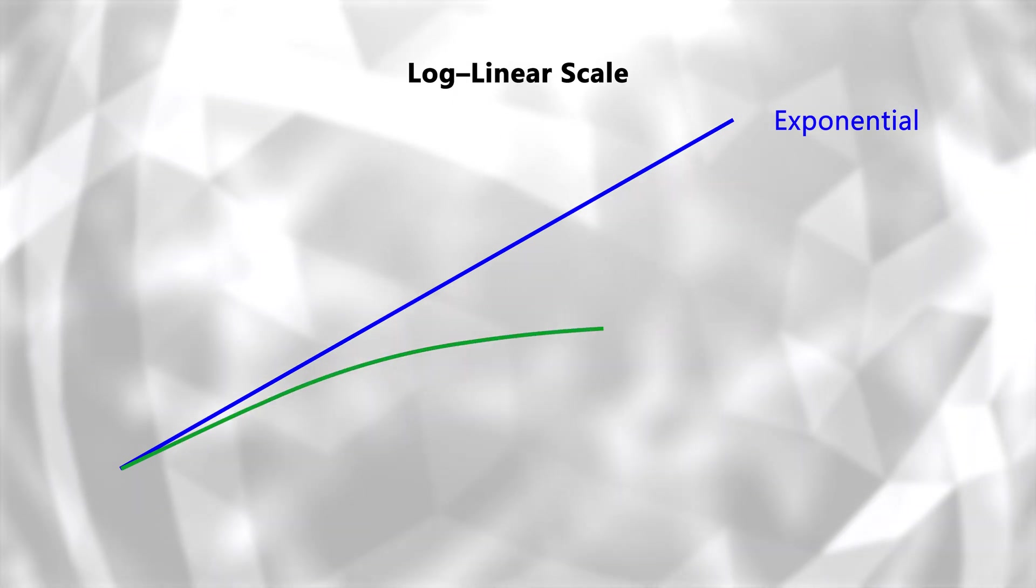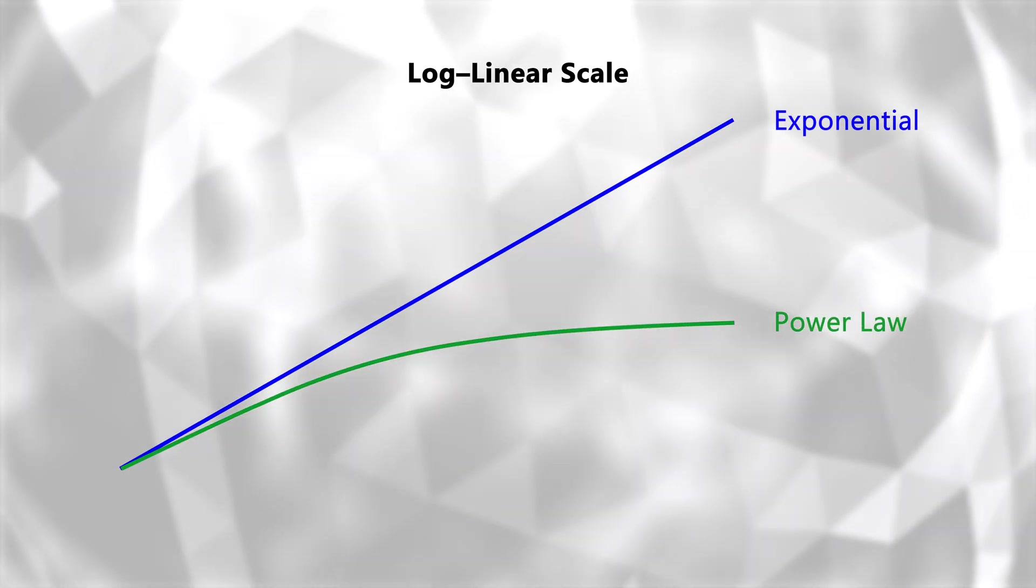When theta is equal to 1, the growth follows a power law. Here, growth does slow down over time, but it's still significant. This is because the rate of growth is inversely tied to the network's age. So as the network gets older, it expands more slowly, but it keeps growing nonetheless.